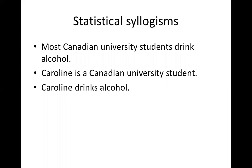Then we have statistical syllogisms — another form of part-whole extrapolation. Example: Most Canadian university students drink alcohol, Caroline is a Canadian university student, therefore Caroline drinks alcohol. This argument is not very solid — something is missing. If most Canadian university students drink alcohol, it means not all of them do, so saying Caroline is a Canadian university student does not really prove that she drinks alcohol. In this case you are coming down from the general to the particular.